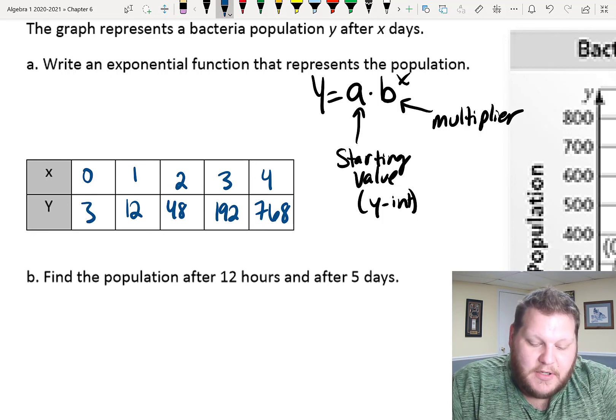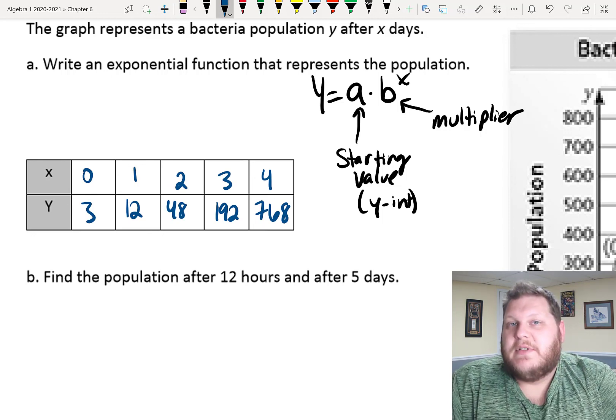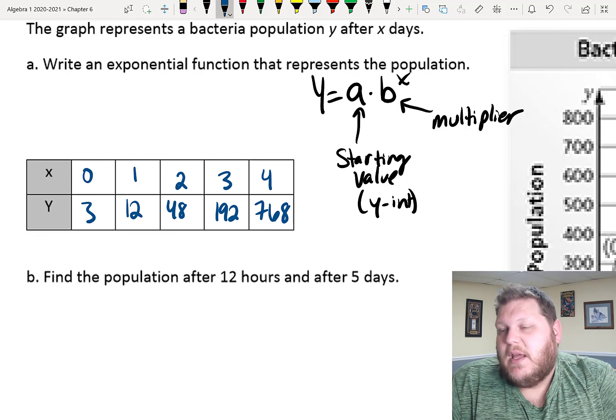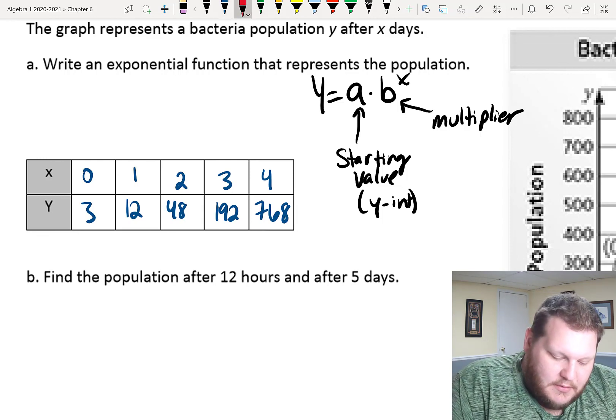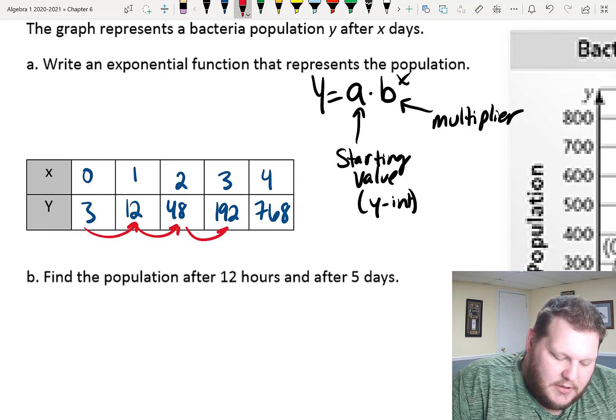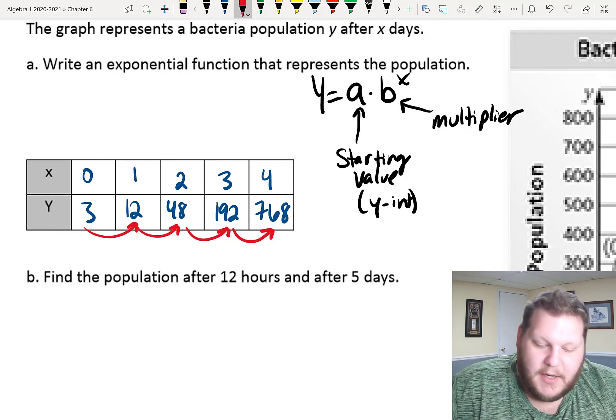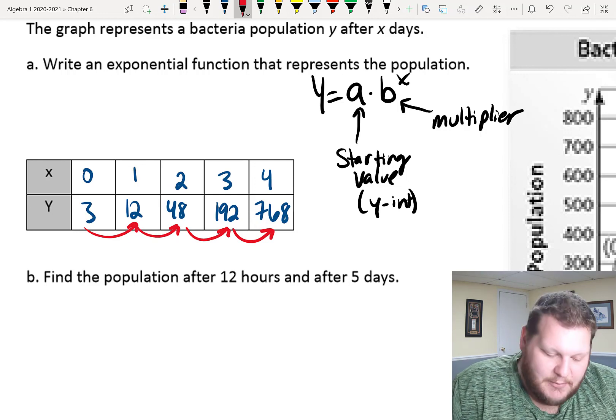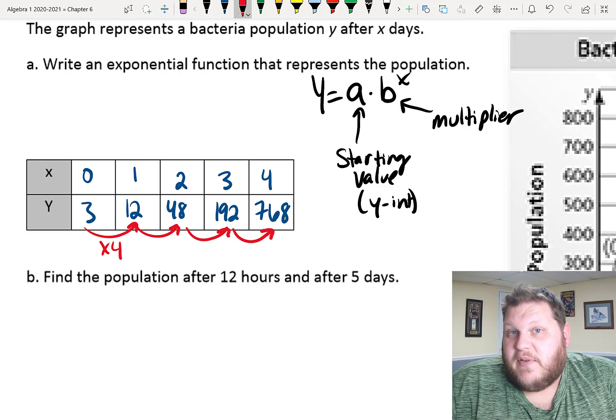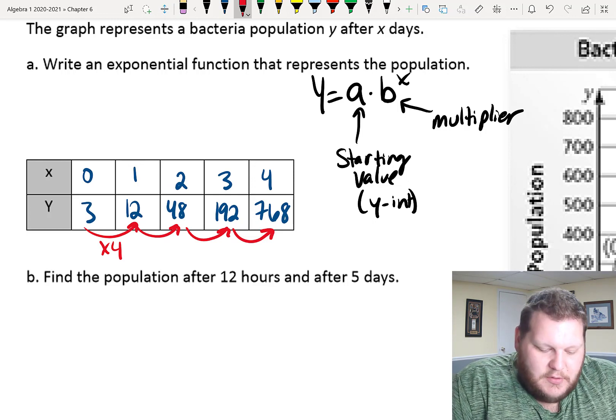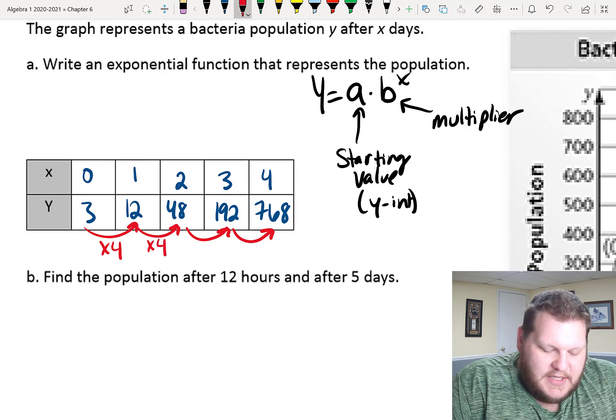So, what I'm trying to figure out here are those two values. I need my starting value, my y-intercept, and I need to figure out my multiplier. Well, for most of us, I would say the multiplier is the easier of the two. Looking at what I'm multiplying by to get from one to the next in my table, 3 times 4 gives me 12.